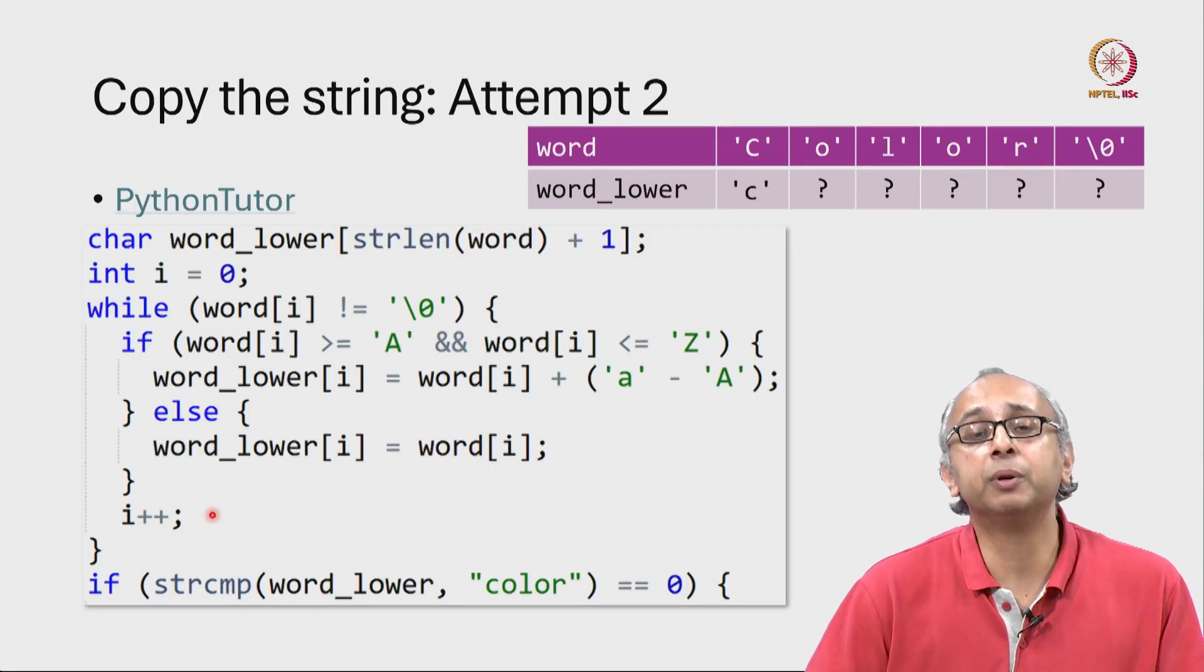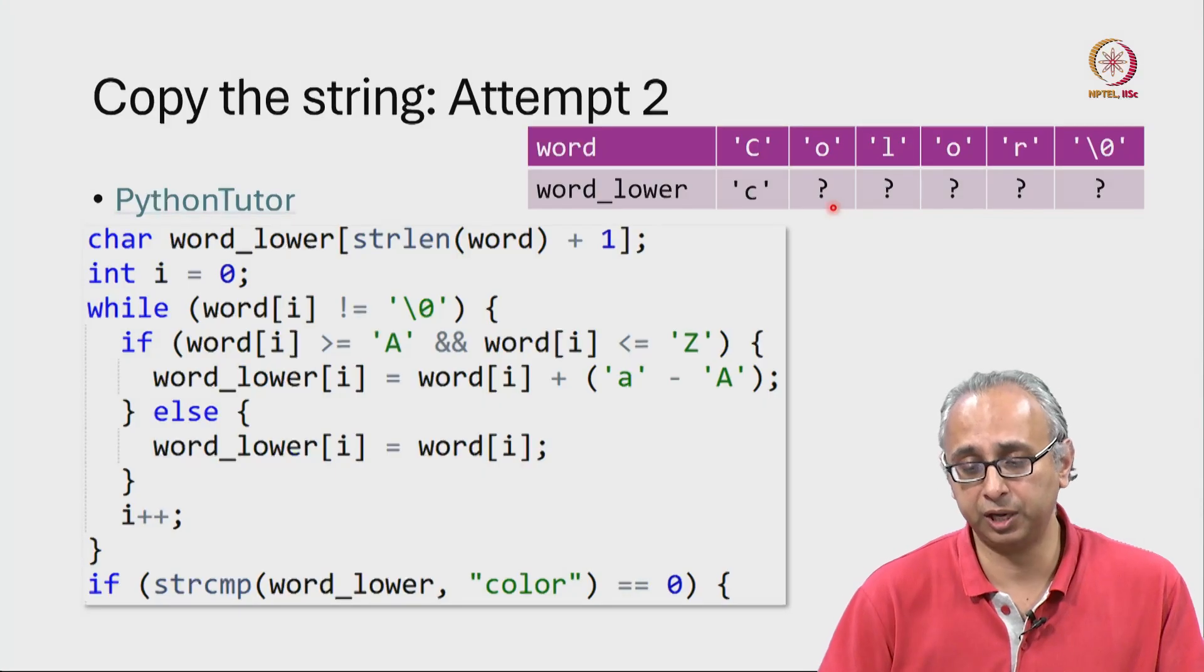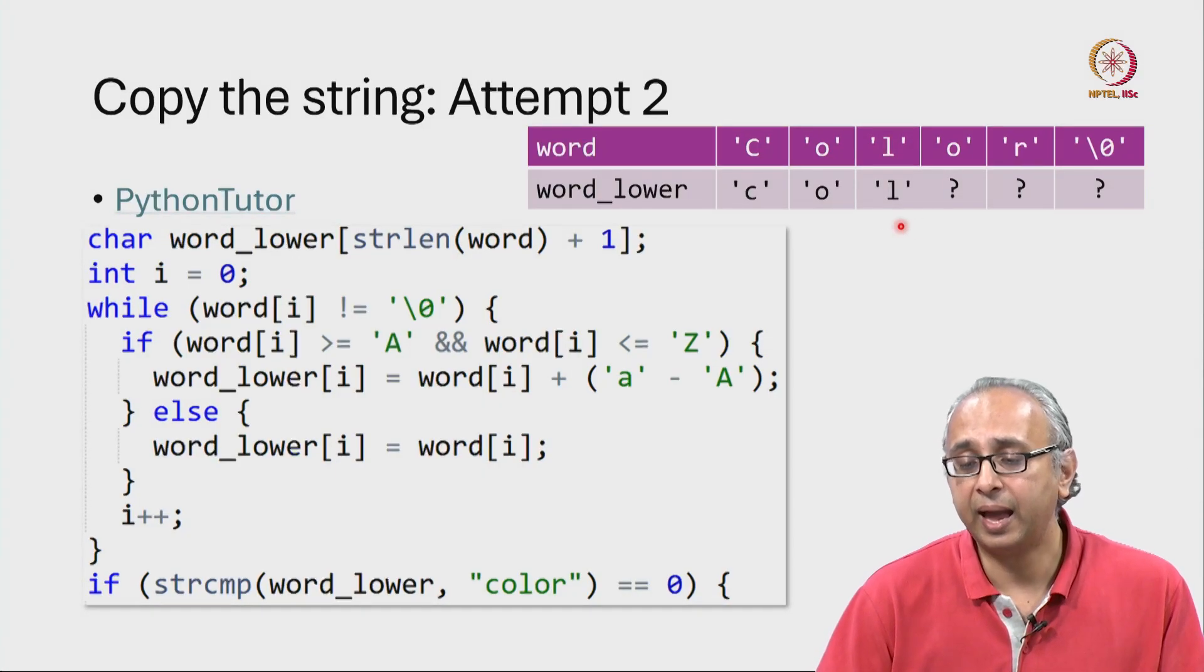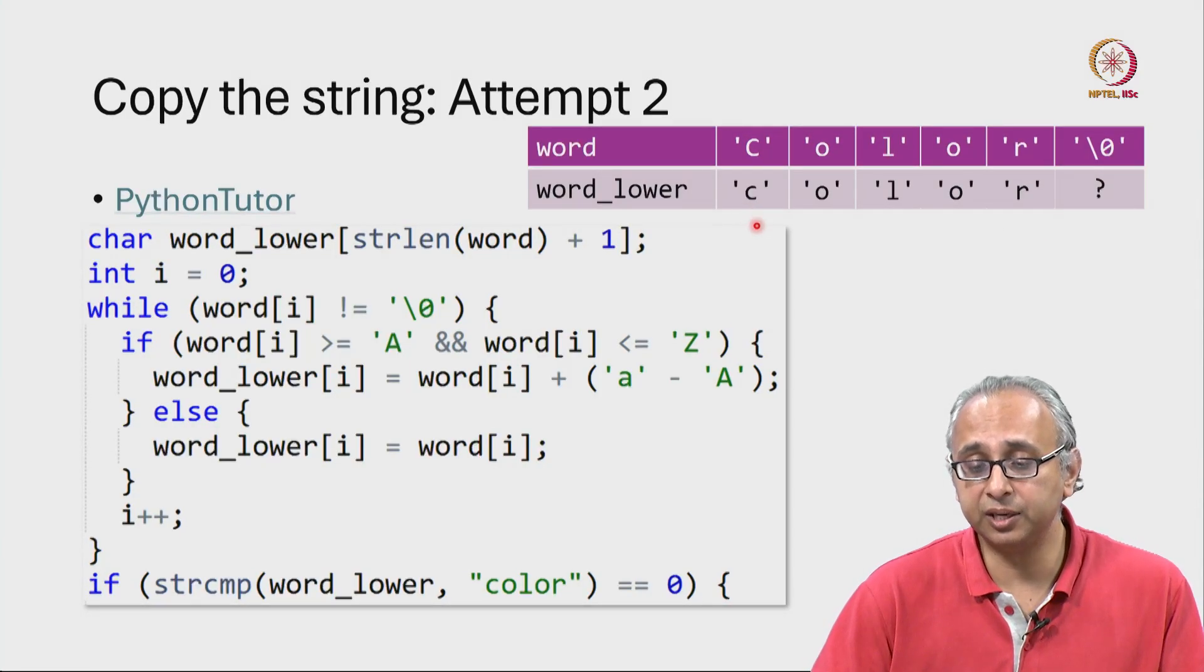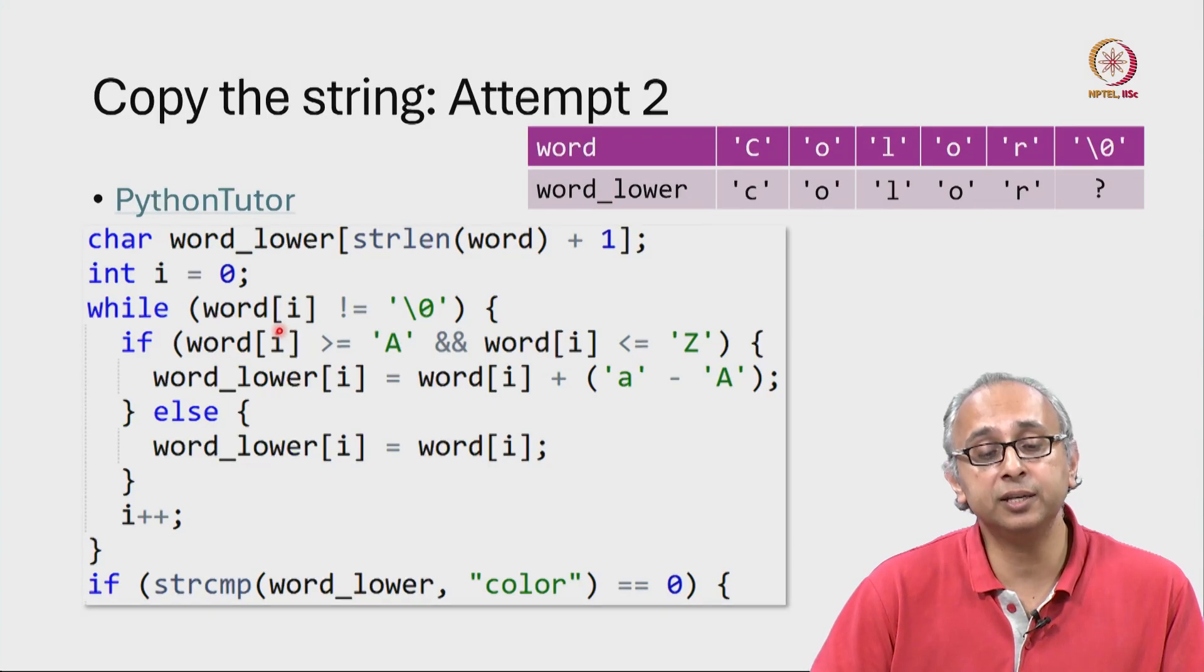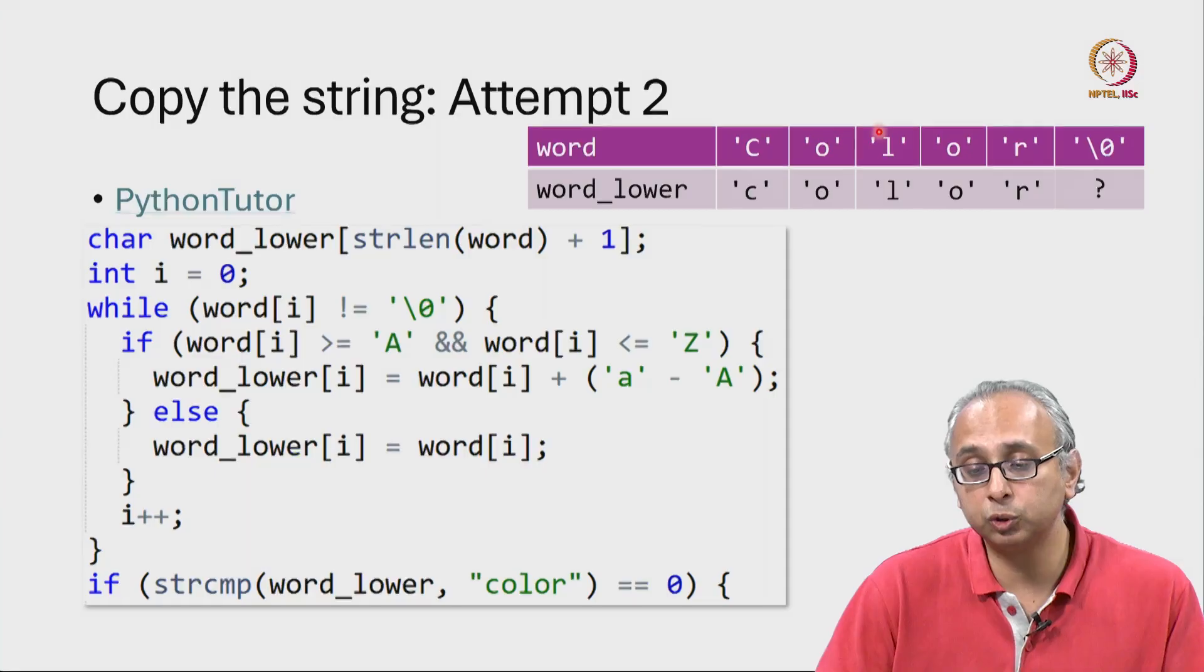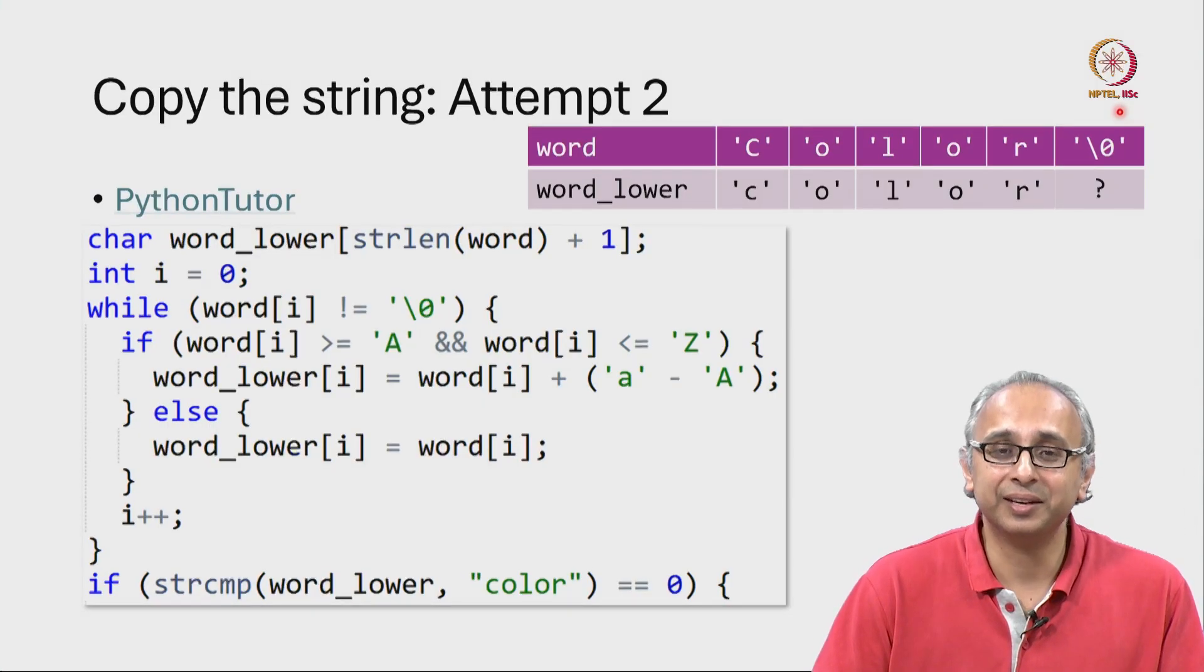Then we will increase the value of i so i will now be 1 and we will be looking at this. This letter is of course not between uppercase A and uppercase Z so we will simply copy it from this location to this location, and then similarly for the l and the o and the r. At this point we have done index 0, 1, 2, 3 and 4. We will increase i from 4 to 5 and we will come back here and we will ask is word[5] not equal to the null character. Well in the original string this is index 0, 1, 2, 3, 4, this is index 5 and word[5] is the null character.